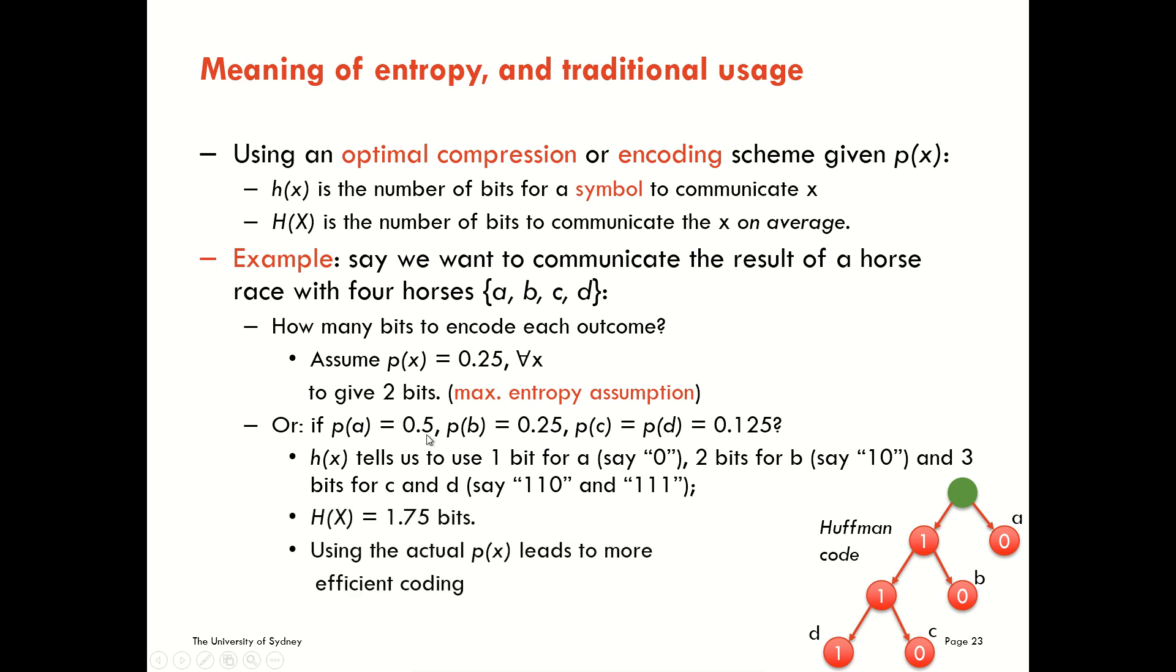So in this case here, for these probability distribution values, we can get an average code length, an average Shannon entropy of 1.75 bits. And we can see that by using the actual probability distribution function that we had, leads to a more efficient coding than if we just assumed 2 bits for every symbol. Okay, we can see there's less bits here to encode in this most efficient way than if we just guessed 2 bits in general.